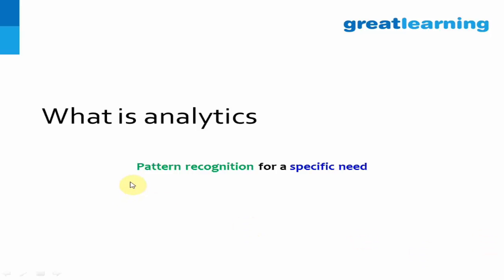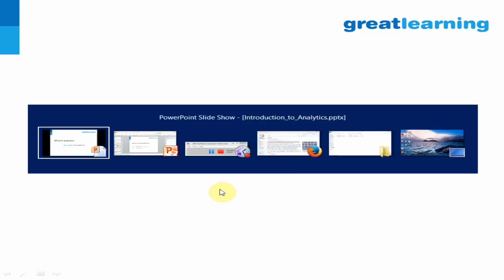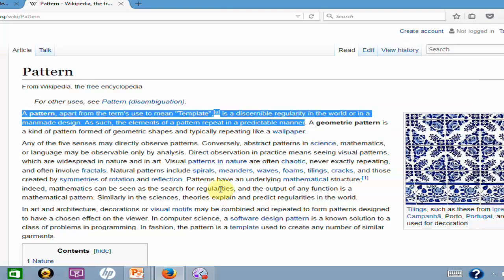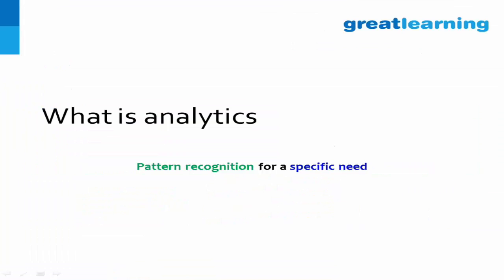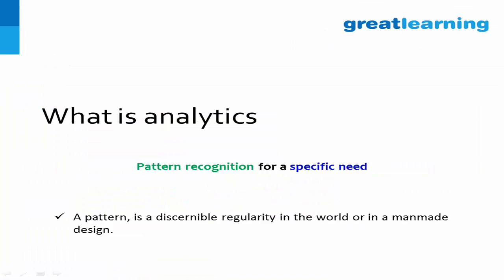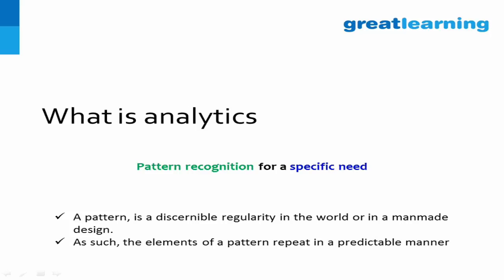What is a pattern? If you look at the definition of the word 'pattern' on Wikipedia, you will find it gives you a hint that a pattern is a regularity in the world — either in the natural world or in a man-made design. That regularity means you can predict it; it will repeat in a predictable manner.